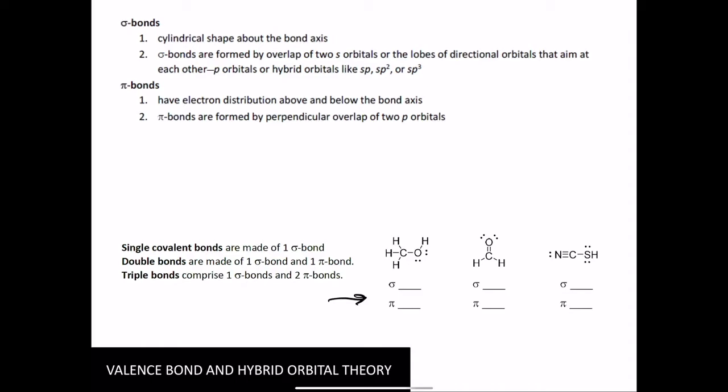All right, you're done? So sigma, one, two, three, four, five. How many pi's? Zero. All right, how many sigmas? One, two, three. How many pi's? One.